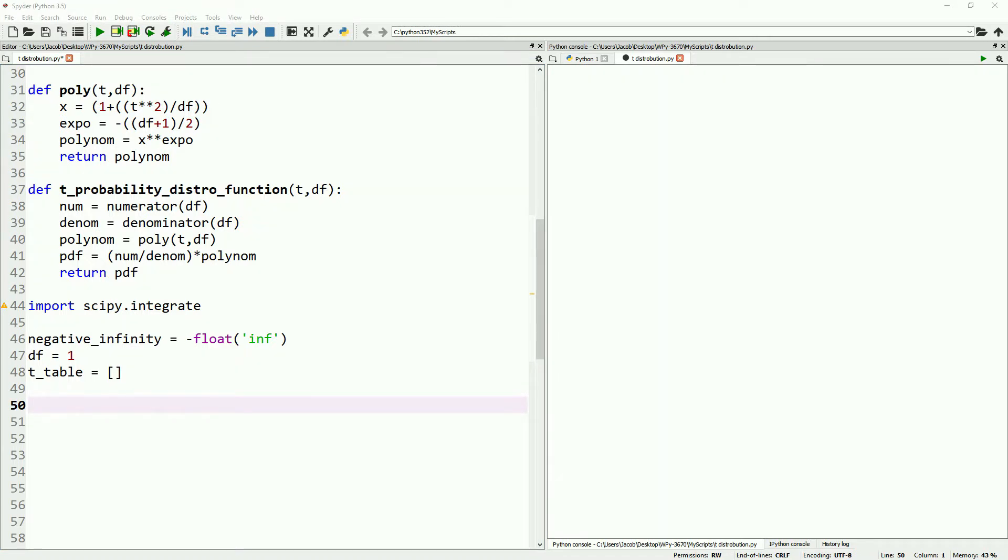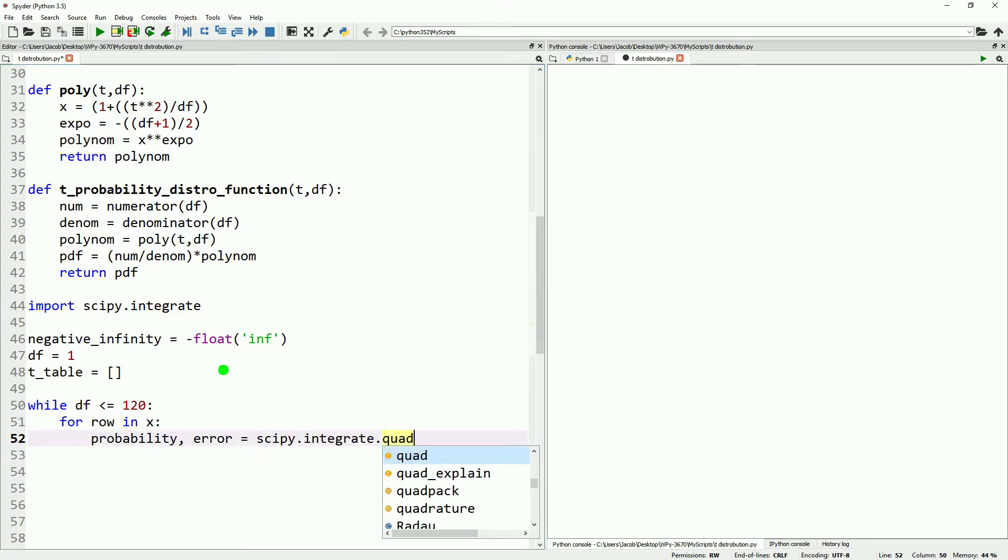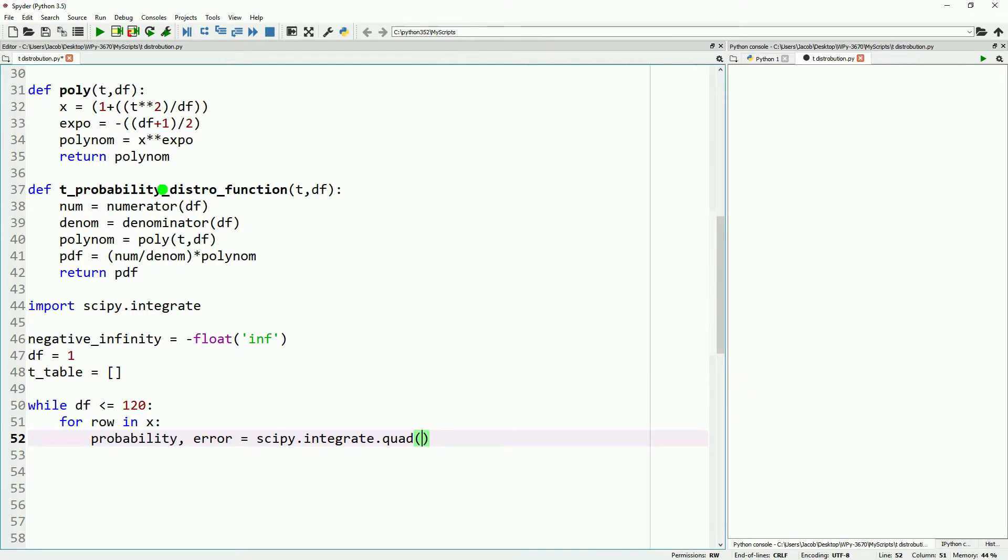We'll start with negative infinity, start our degrees of freedom at 1, and create an empty list called t_table. While degrees of freedom is less than or equal to 120, for each row in x, we'll get the probability and error of our integral of the probability distribution function for t. We won't do anything with the error value, but we need to stuff it into a variable.